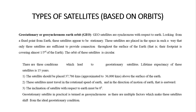The types of satellite based on orbits. Geostationary or Geosynchronous Earth Orbit, i.e. GEO satellites, are synchronous with respect to Earth. Looking from a fixed point from Earth, this satellite appears to be stationary. These satellites are placed in space in such a way that only 3 satellites are sufficient to provide connection throughout the surface of the Earth. That is, their footprint is covering almost one third of the Earth.